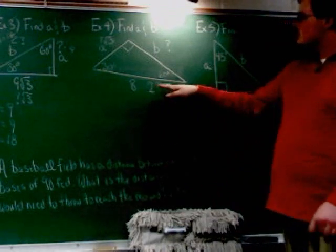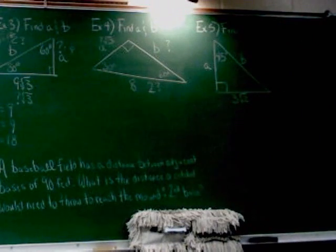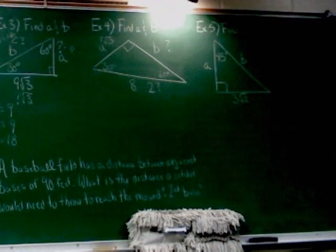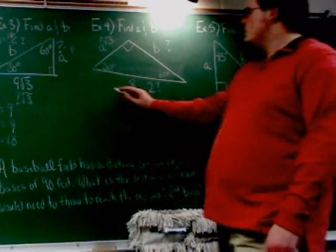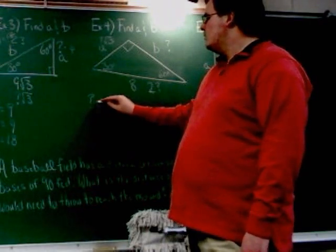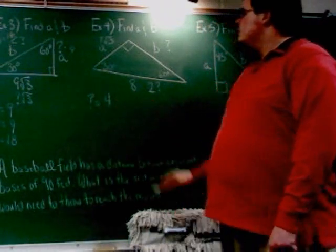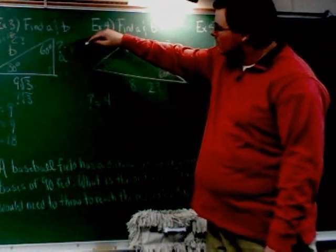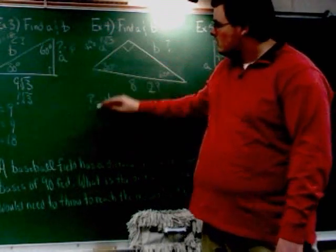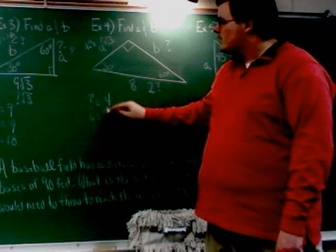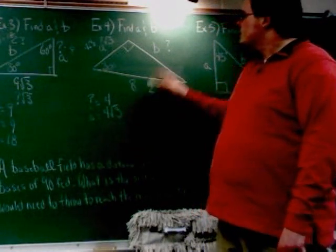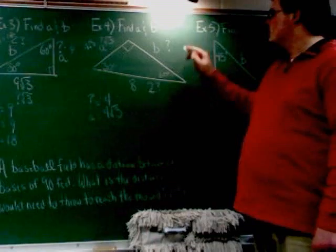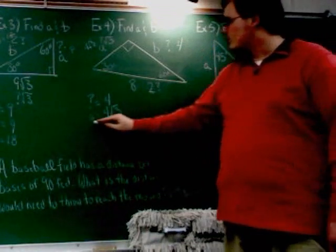All right, so you can see that 2 times question mark is the same as 8. Well, that means question mark has to be 4. 2 times 4 is 8. So question mark has to be 4. So this side, the A side, is question mark root 3, or 4 root 3. And the B side just says question mark. So B is just 4.